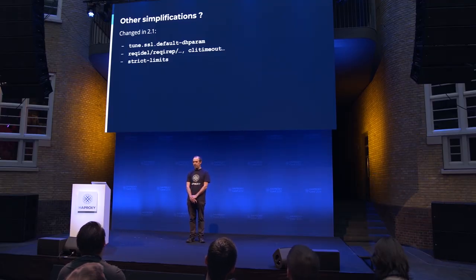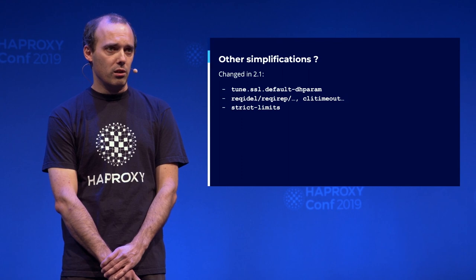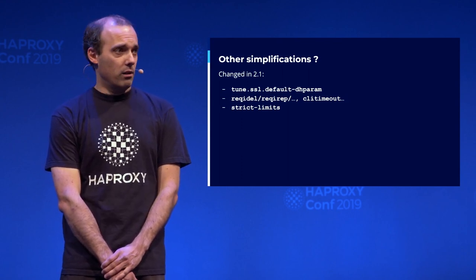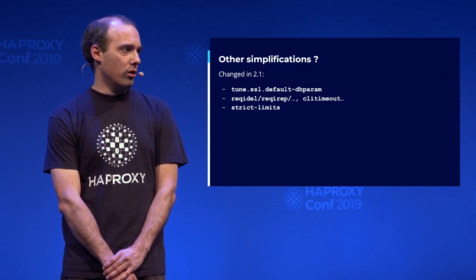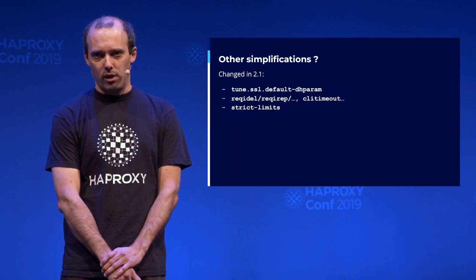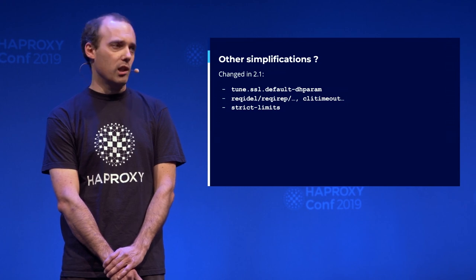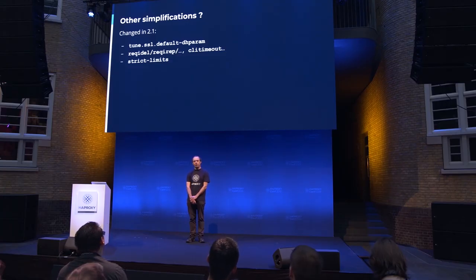Some users were bothered by the fact that when HAProxy cannot allocate enough descriptors, it emits a warning saying it could not do this but will run anyway. For developers, you don't care — you just want to run unit tests. But for production, you restart your service, it goes up, you don't notice the warning (especially with systemd), and when the load increases, suddenly it fails to accept new connections. So the idea was to turn this into an error. But rather than breaking existing setups, we have a new keyword 'strict-limits' which when enabled turns the warning into a fatal error. Otherwise it remains a warning and will tell you it will become the default in 2.3.